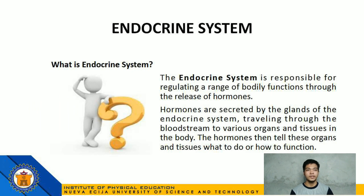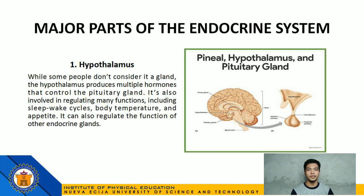Let's now proceed to the endocrine system. The endocrine system is responsible for regulating a range of bodily functions through the release of hormones. Hormones are secreted by the glands of the endocrine system, traveling through the bloodstream to various organs and tissues in the body, telling these organs and tissues what to do or how to function. Number 1: Hypothalamus — while some people don't consider it a gland, the hypothalamus produces multiple hormones that control the pituitary gland. It is involved in regulating many functions including sleep-wake cycles, body temperature, and appetite, and can regulate the function of other endocrine glands.